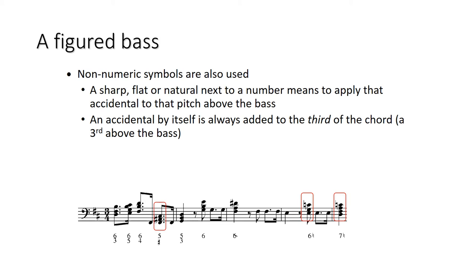So in this one we have F sharp with a five. And a sharp by itself, that's the third. So I'm going to put a sharp on the third, making an F sharp major triad. Yeah, so if you see an accidental by itself, it always means the third above the bass.